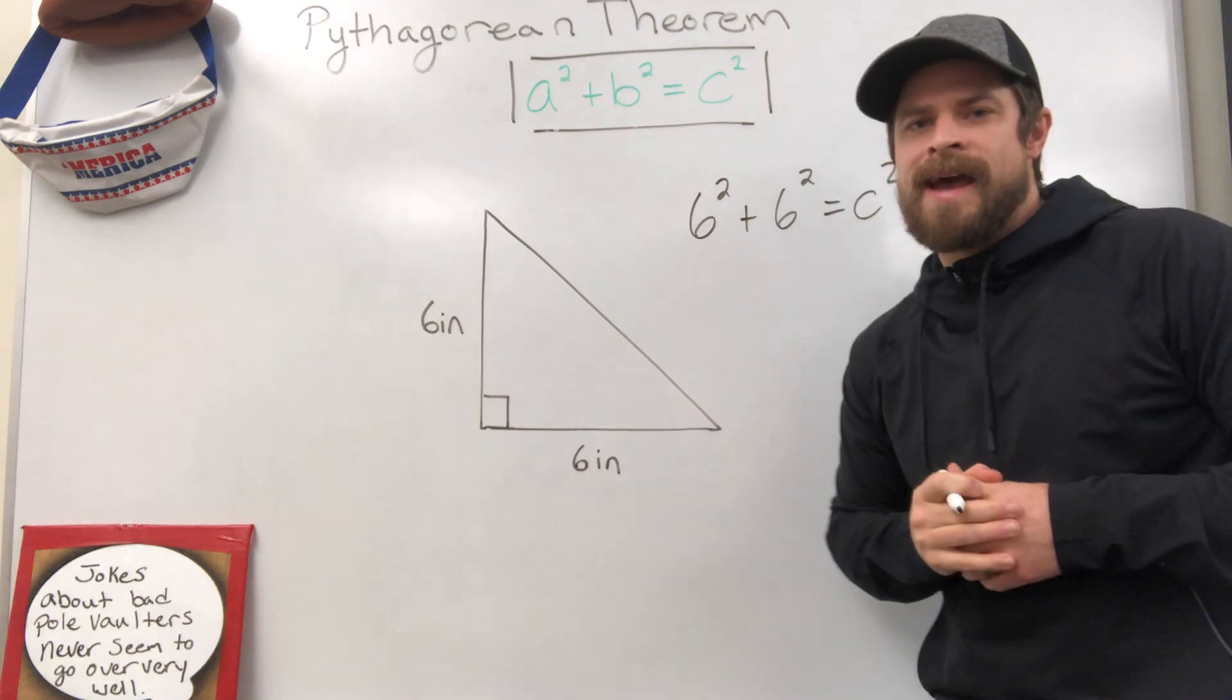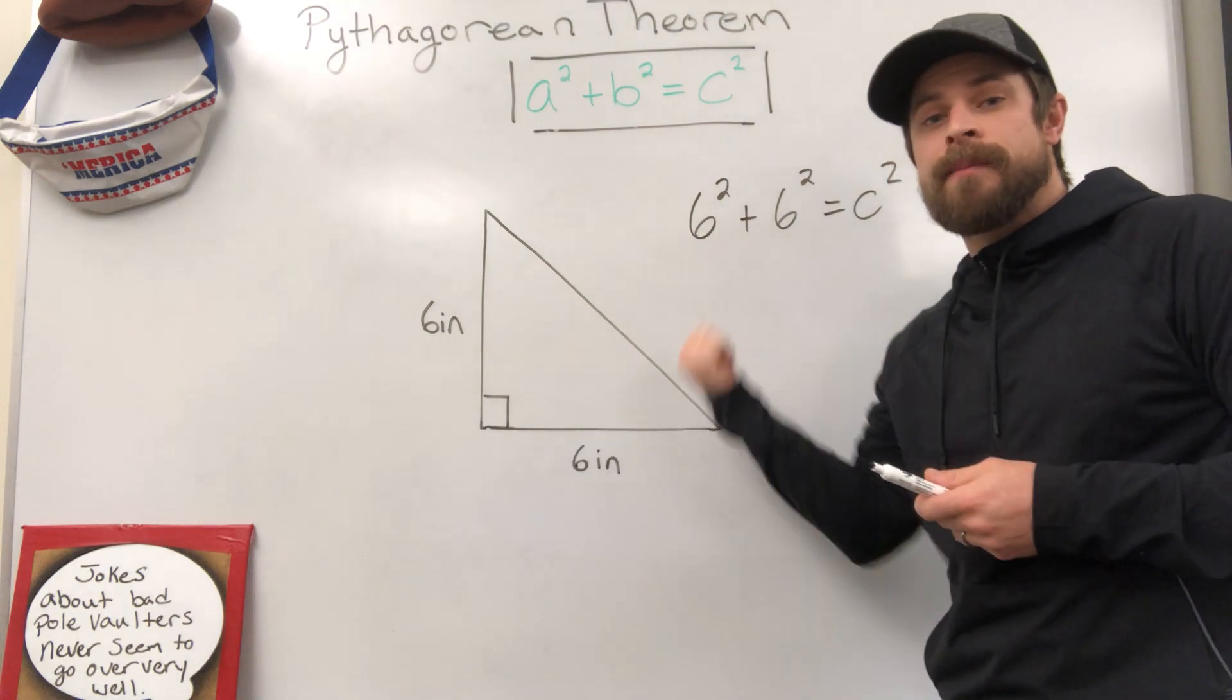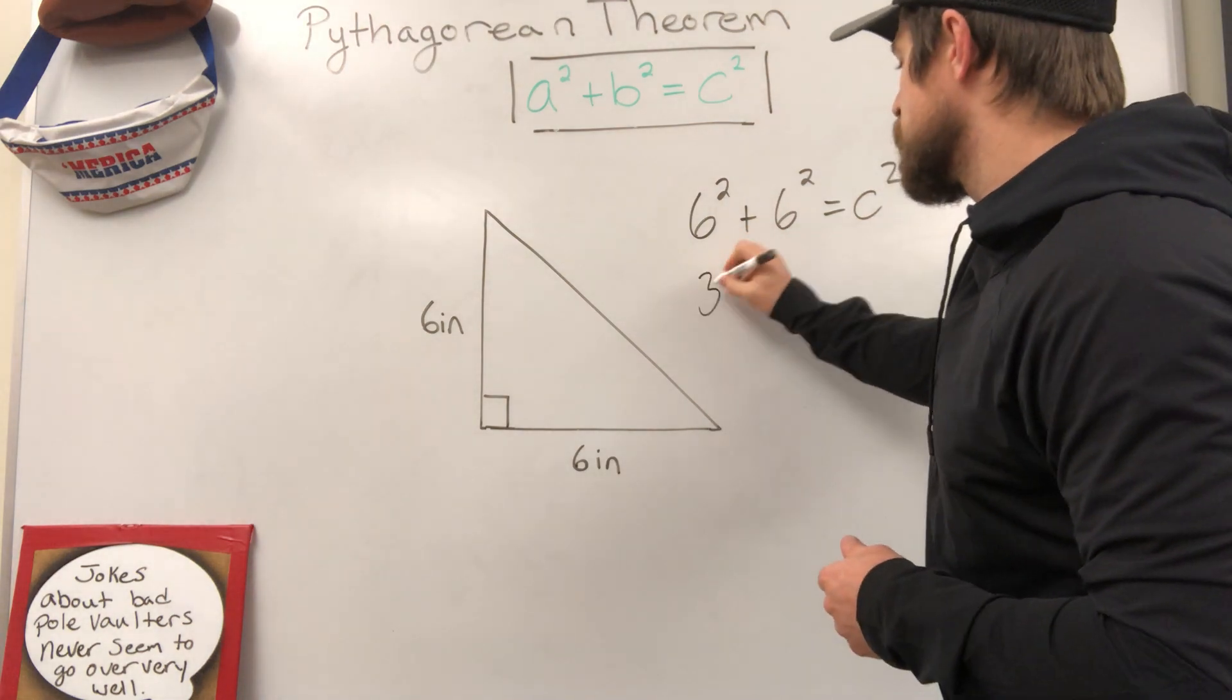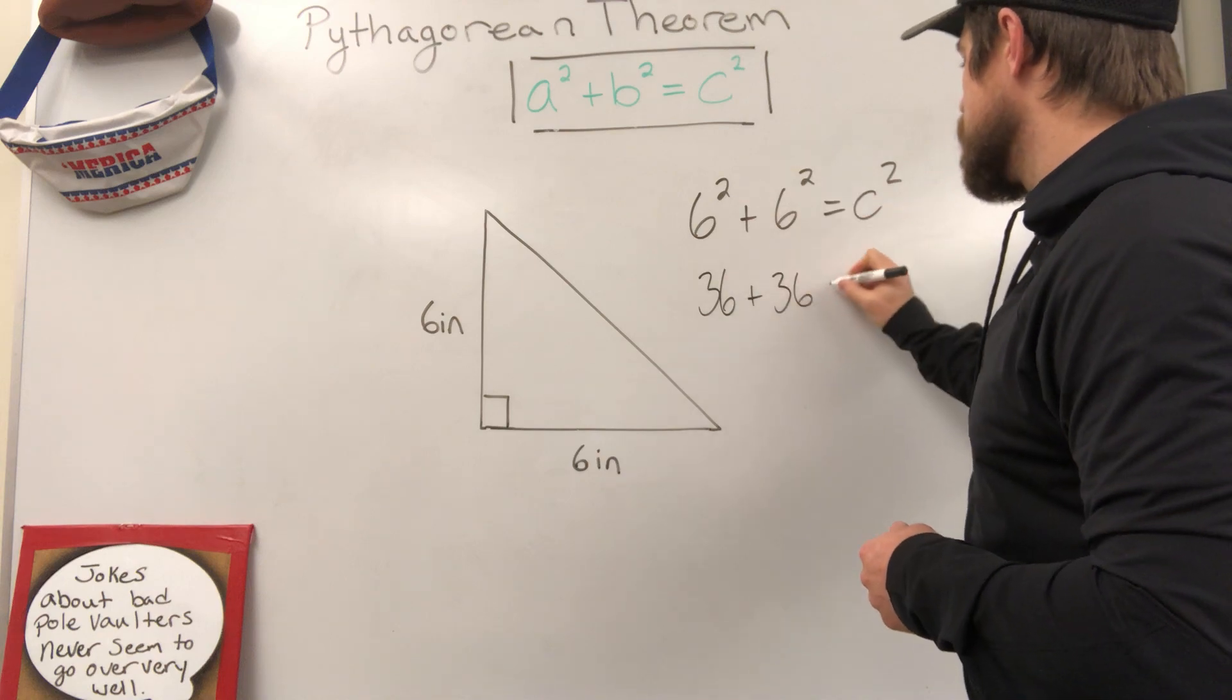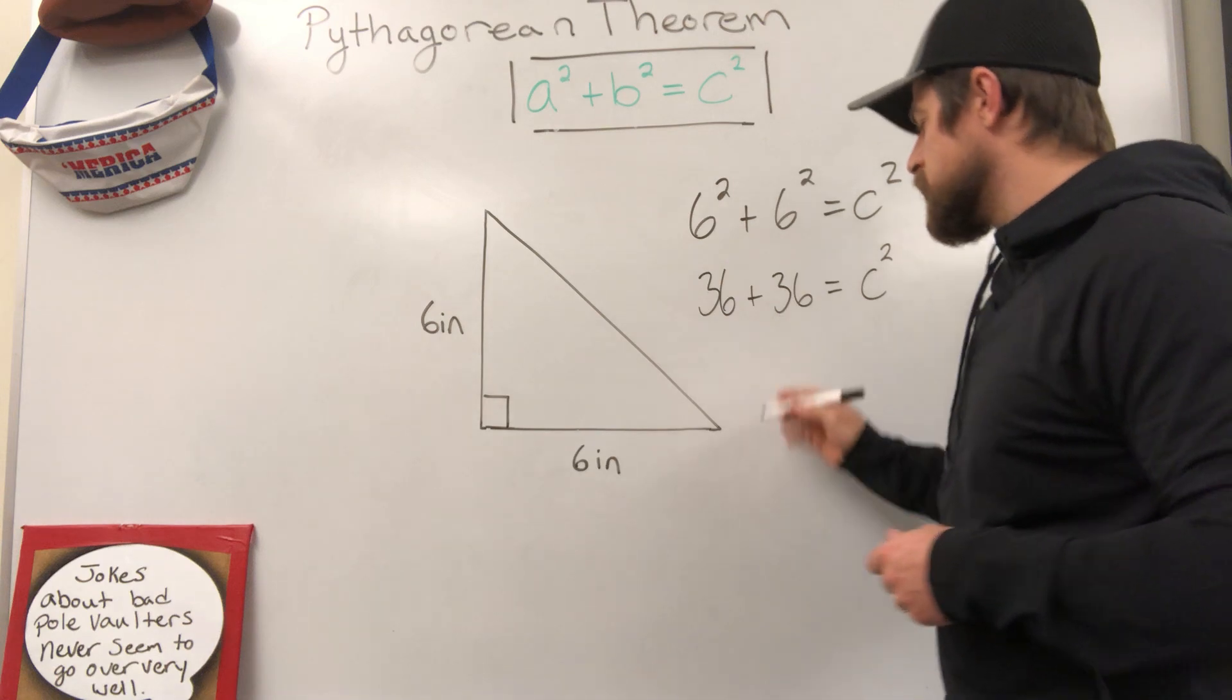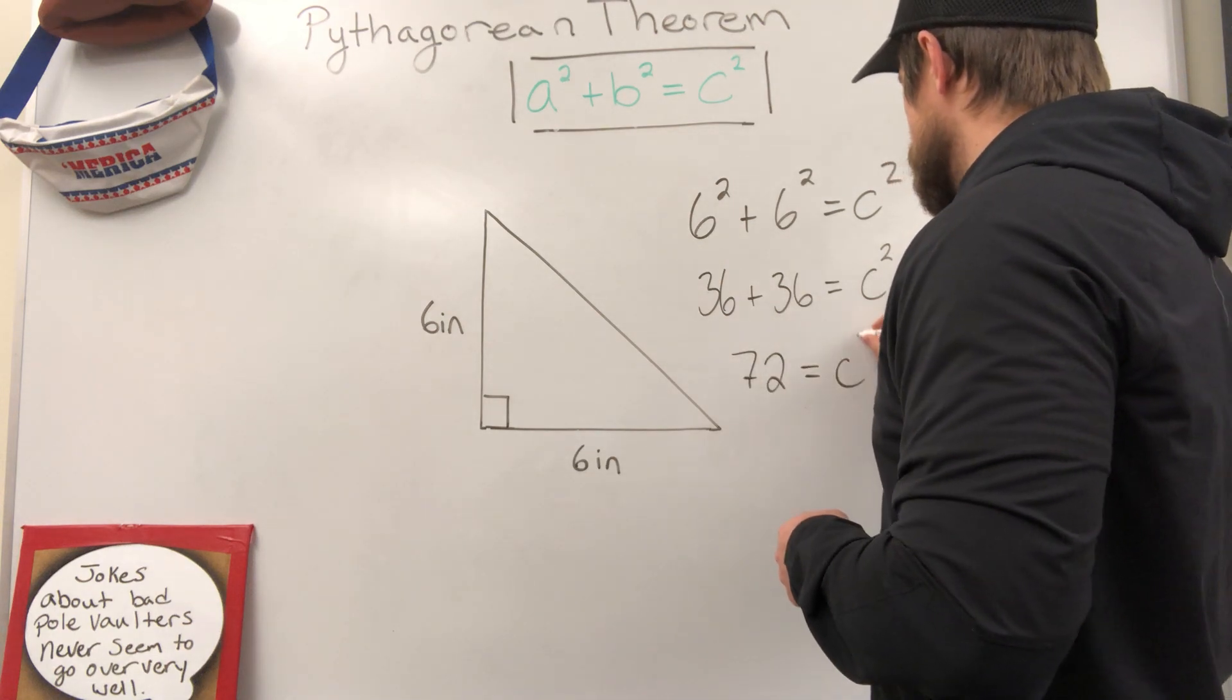Now I just need to work this out to find what my missing side, specifically the hypotenuse in this case, is. 6 squared is 36 plus another 6 squared, which is 36, equals C squared. 36 plus 36 is going to give me 72, equals C squared.